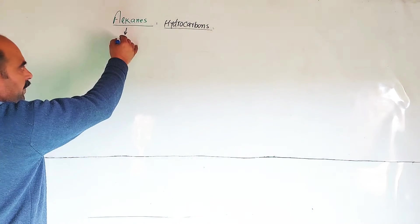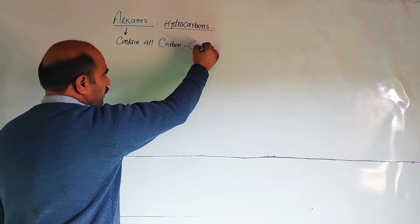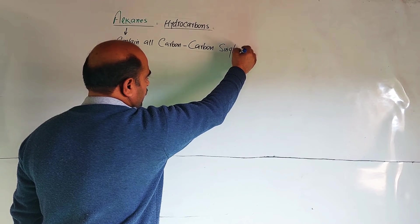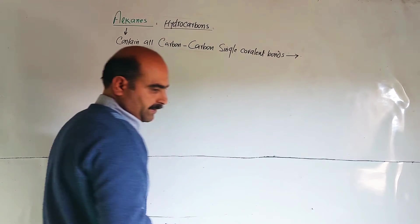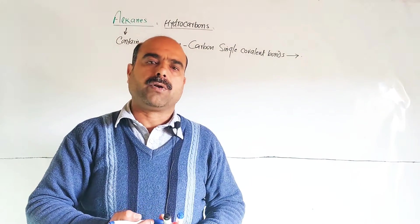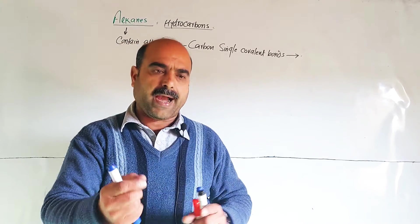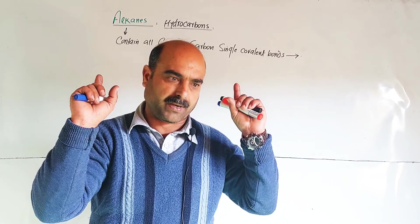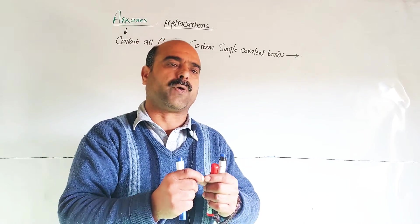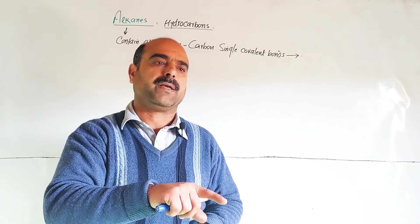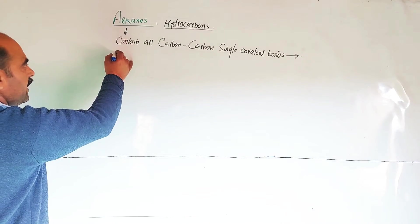Alkanes are those compounds which contain all carbon-to-carbon single covalent bonds. All carbon atoms are connected by single covalent bonds. Such organic compounds are called alkanes. They have a general formula.